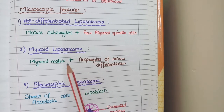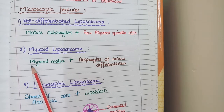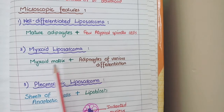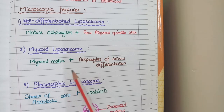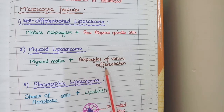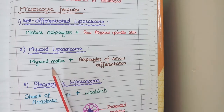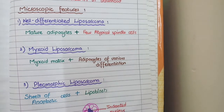The second histopathological subtype is myxoid liposarcoma. Myxoid means a mucoid or mucopolysaccharide matrix that appears as a blue basophilic matrix on the microscope. As this is a tumor of relatively higher grade, instead of mature adipocytes, you will see adipocytes of various differentiation. So in myxoid liposarcoma, you see myxoid matrix along with adipocytes of various differentiation.